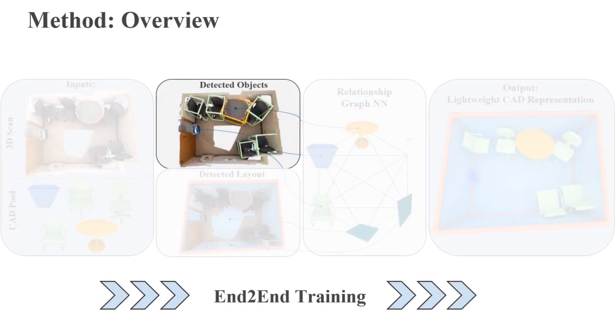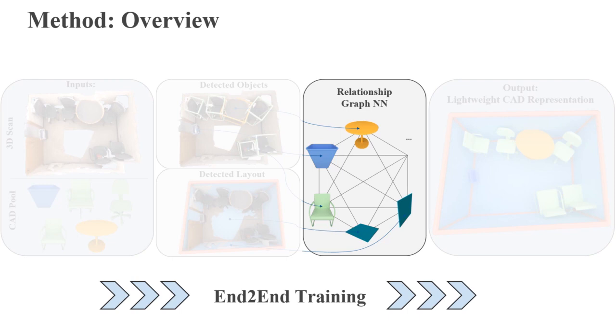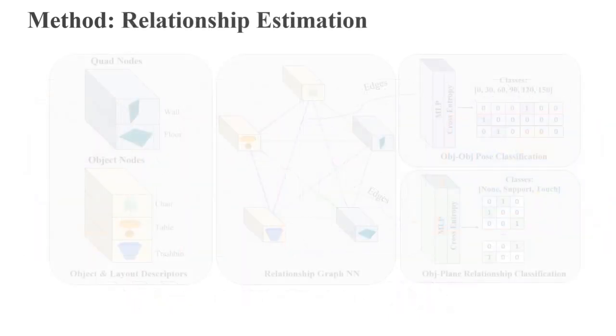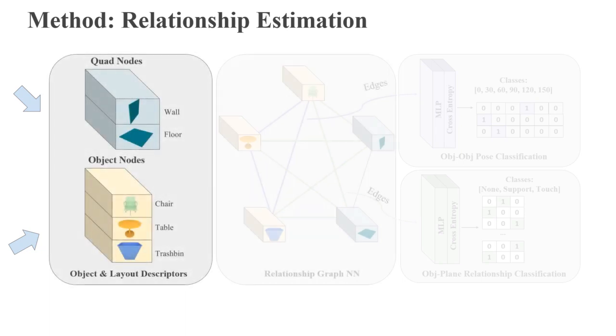With detected objects and layout components, we then establish their interrelationships through a graph neural network. The set of objects and layout quads form the nodes of the graph, and edges are constructed between every object-object node pair and every object-quad node pair.